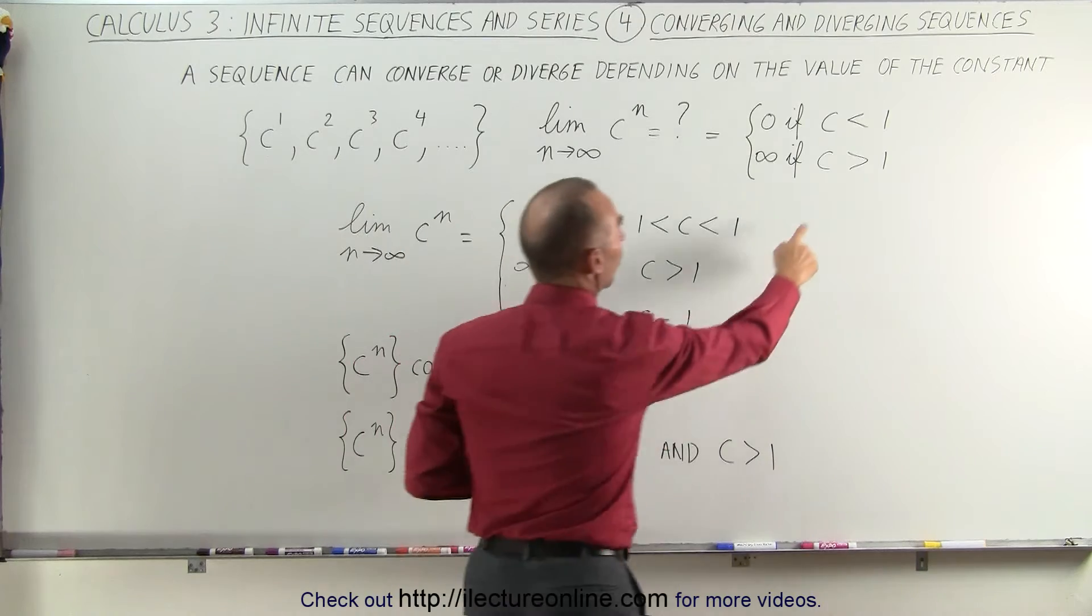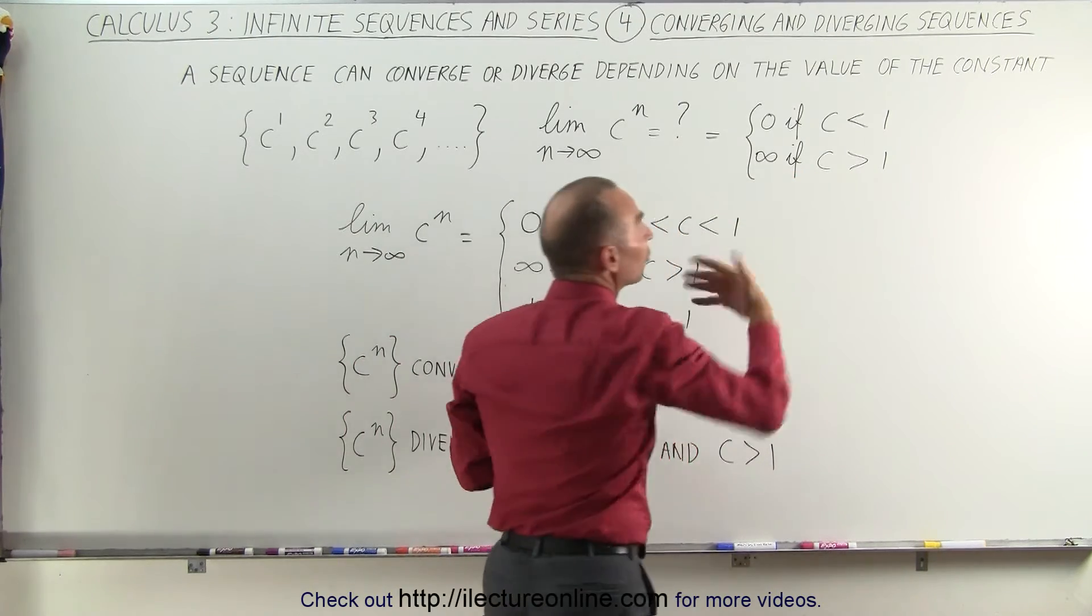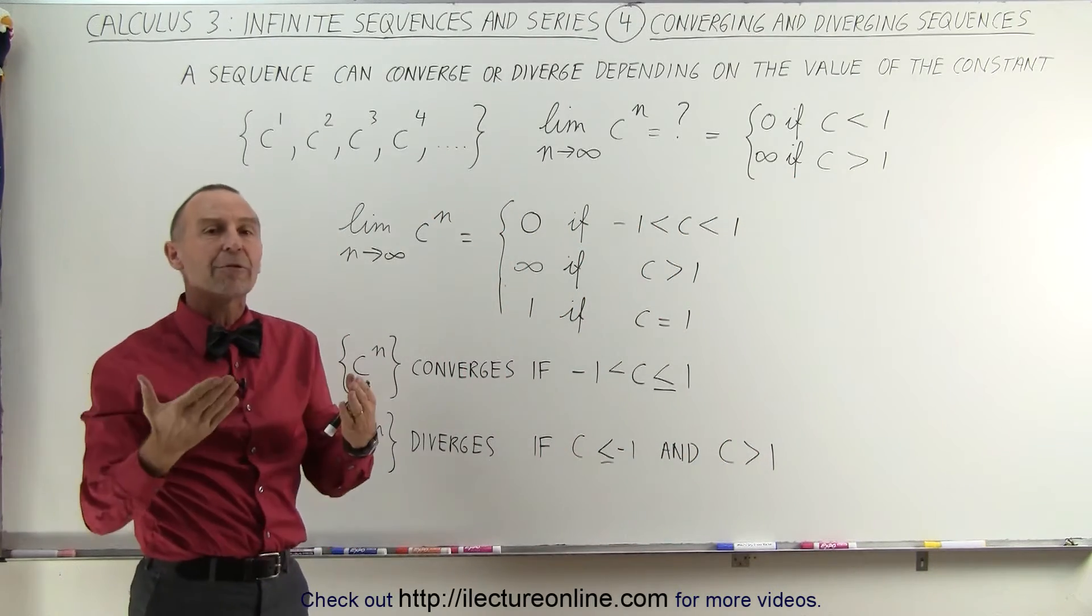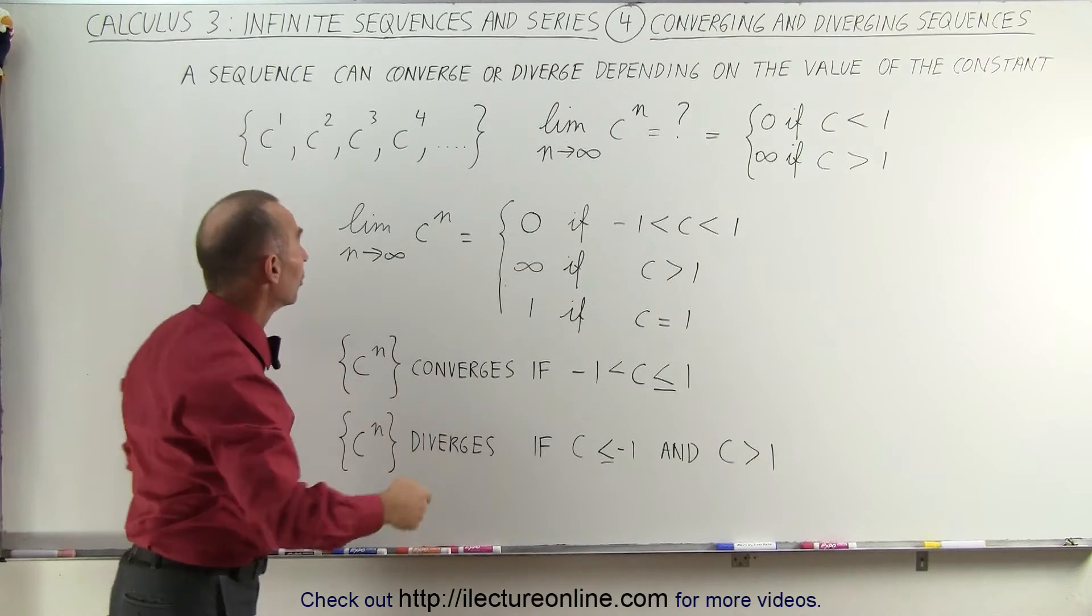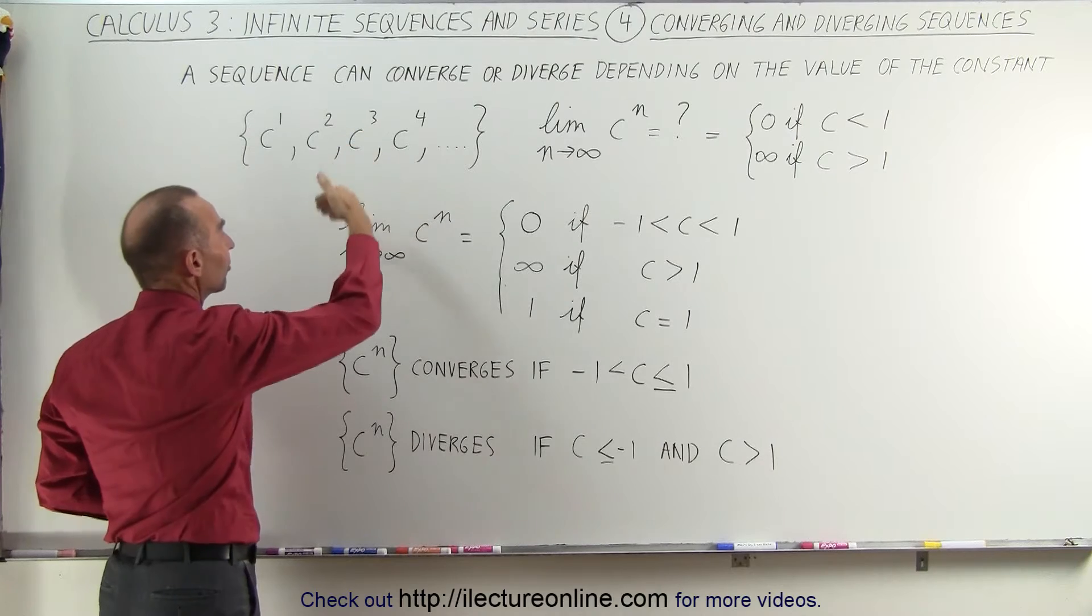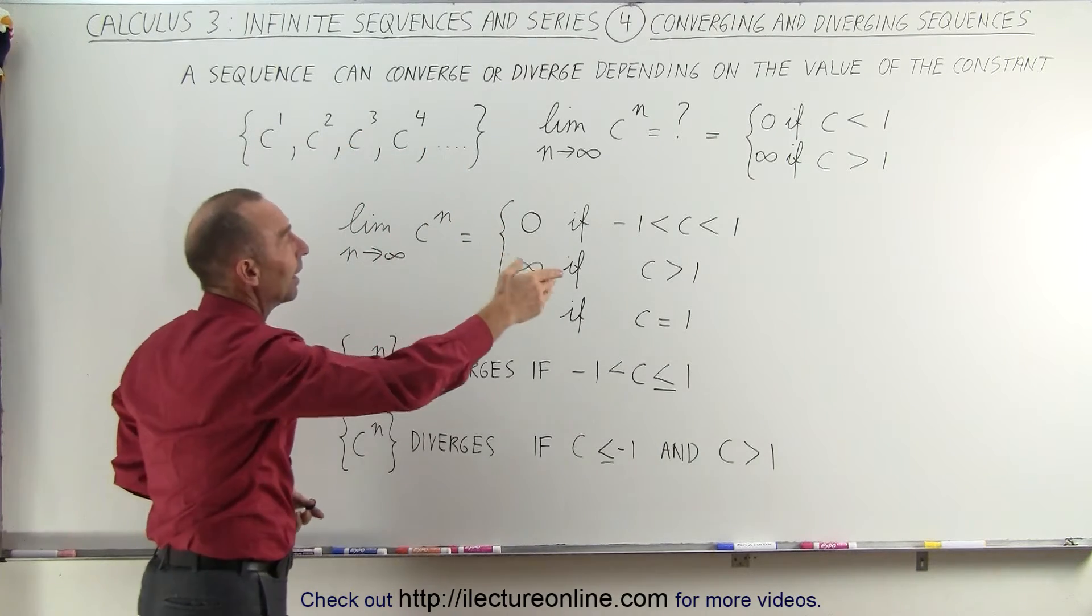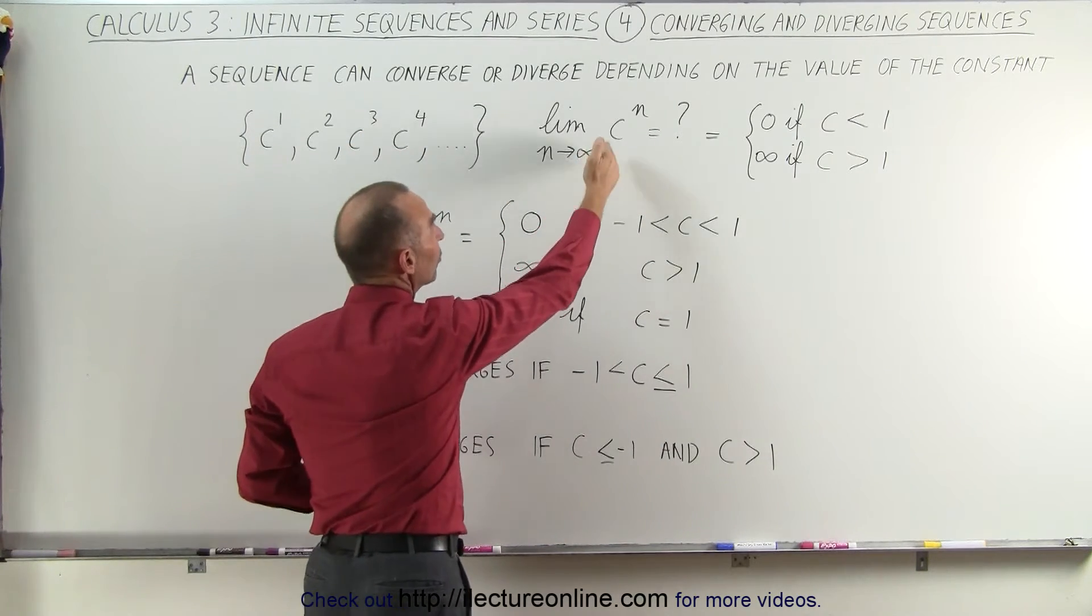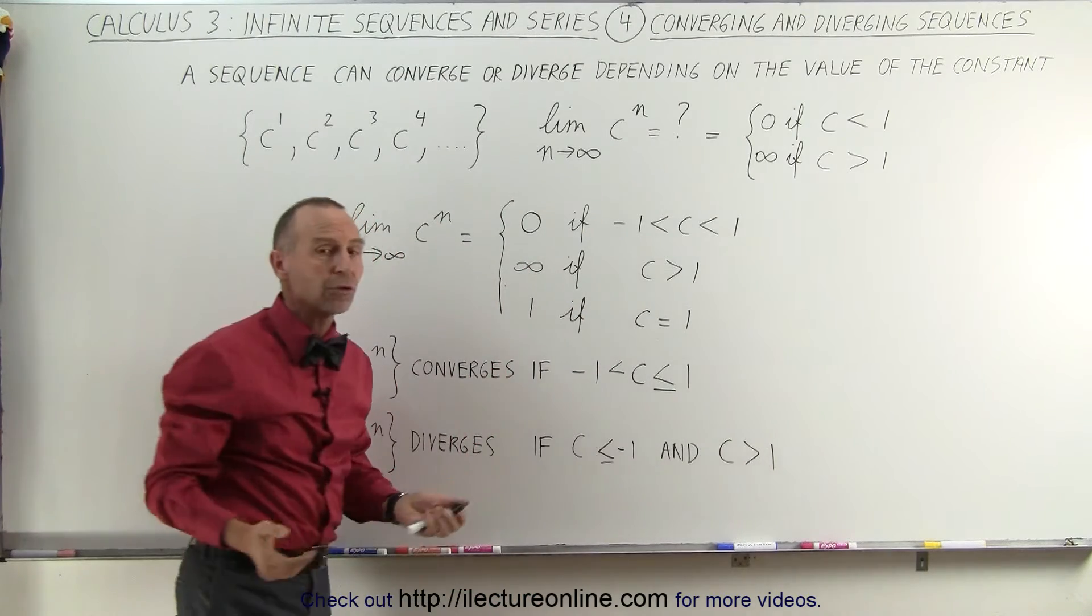However if c is larger than 1 then it doesn't converge. The sequence diverges because the number gets bigger and bigger. The number 2 raised to the first power, to the second power, to the third power gets larger and larger, and eventually as n goes to infinity, c to the n power will also be infinity.